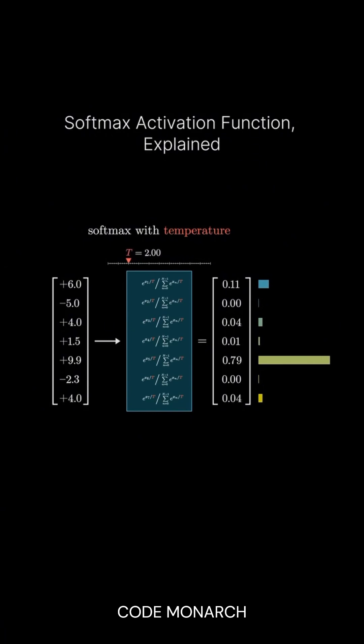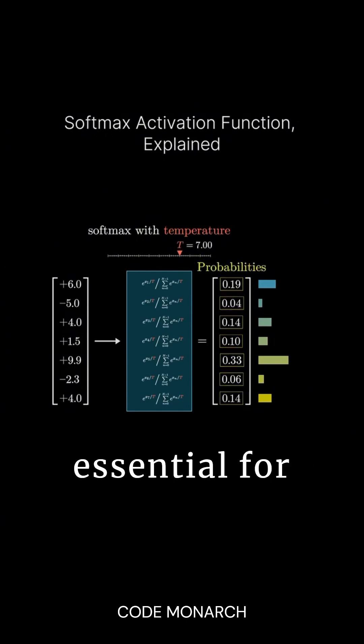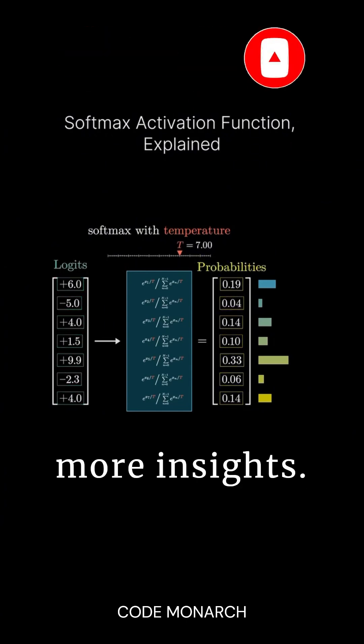So remember, while the outputs of the softmax function are called probabilities, the inputs are known as logits. Understanding softmax is essential for mastering AI models. Don't forget to subscribe for more insights.